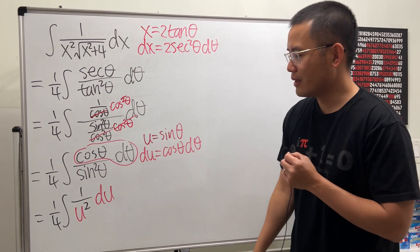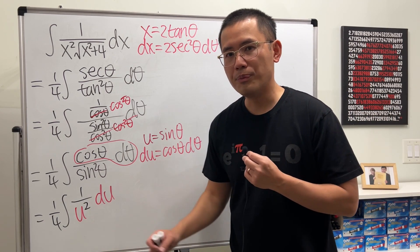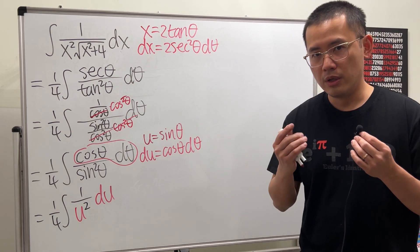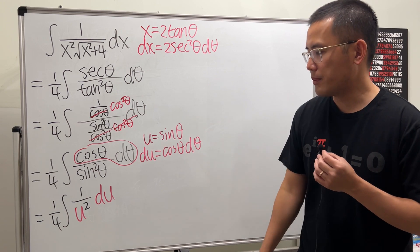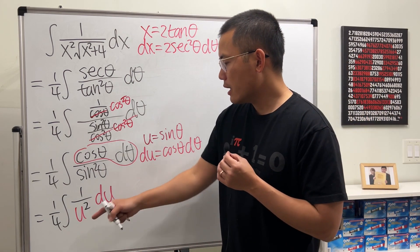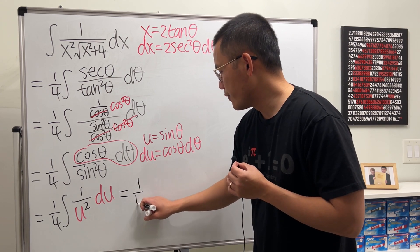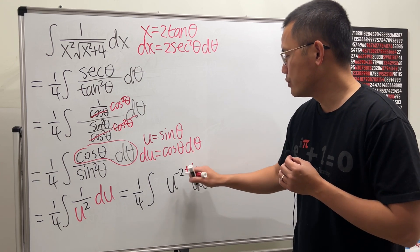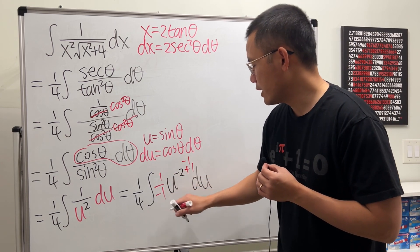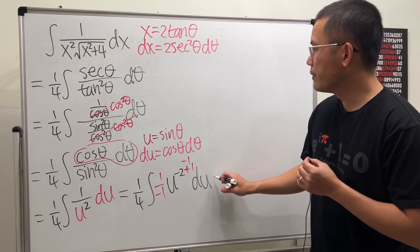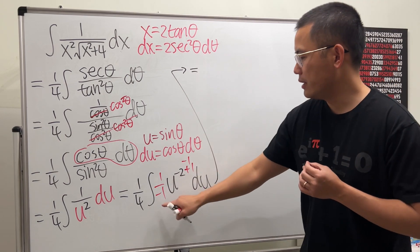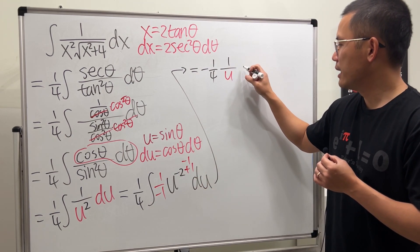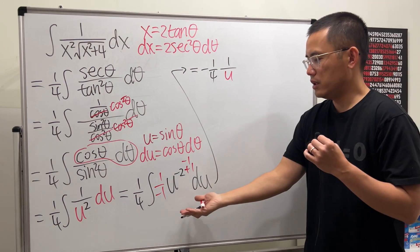In the u-world we apply the reverse power rule. We write (1/4) times the integral of u to the negative 2, integrate to get u to the negative 1 divided by negative 1. This gives us negative 1/4 times u to the negative 1, which is negative 1/(4u). That completes the integration step.